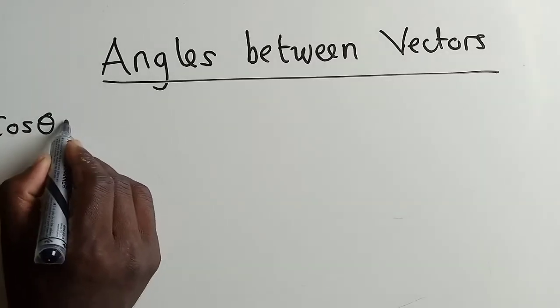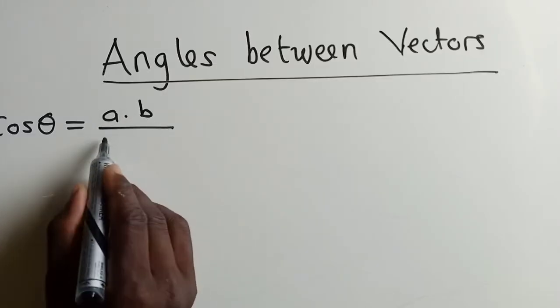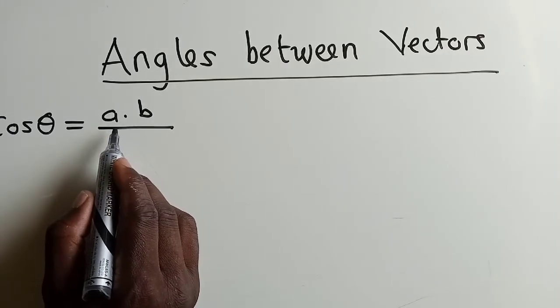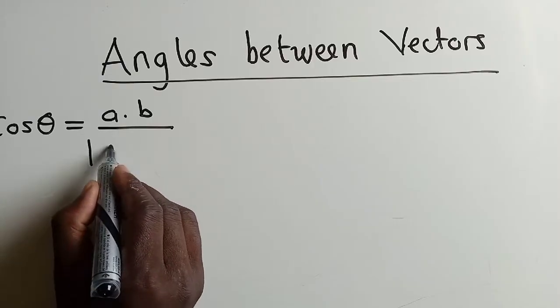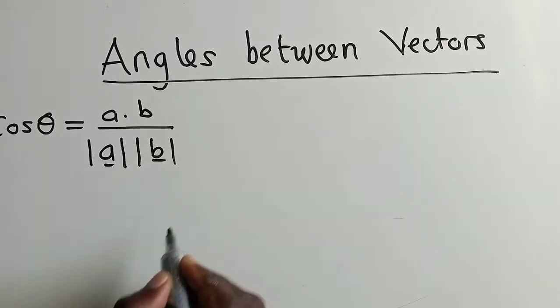Of course, theta is equal to the dot product of the given vectors over the magnitude of A multiplied by the magnitude of vector B.